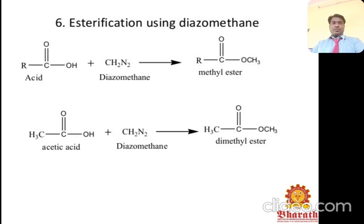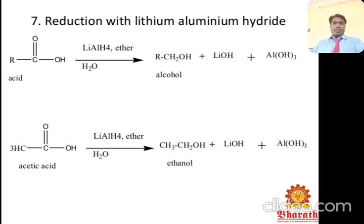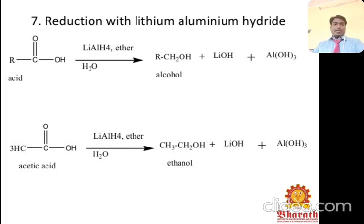Esterification using diazomethane: carboxylic acid reacted with diazomethane gives the methyl ester. Reduction with lithium aluminum hydride: carboxylic acid reacted with LiAlH₄ gives the alcohol, along with lithium hydroxide and aluminum hydroxide. For example, acetic acid with LiAlH₄ gives ethanol plus lithium hydroxide and aluminum hydroxide.